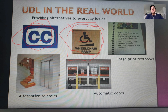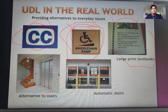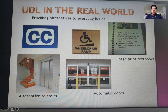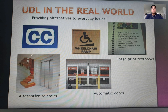Another real-world UDL example is large-print textbooks. Many students suffer from eye problems, and reading small text is very hard for them. Without accommodation, comprehension suffers. So they found ways for learners with eyesight problems to access the same material as those without problems.